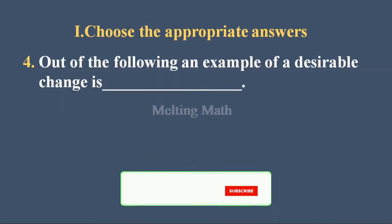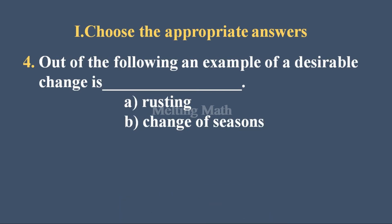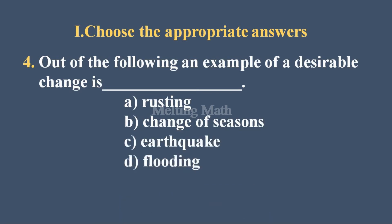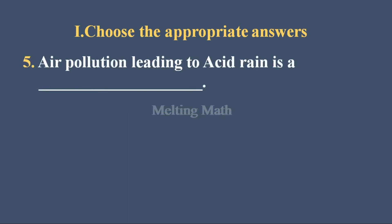Question four — out of the following, an example of a desirable change is: a) rusting, b) change of season, c) earthquake, or d) flooding. Definitely option B, change of season, is a desirable change, because rusting, earthquake, and flooding are all undesirable changes. The definition of desirable change is anything which is not harmful to our environment — change of season is not harmful to our environment and is helpful for us.